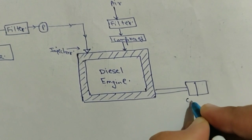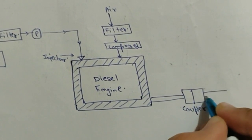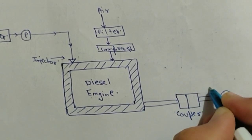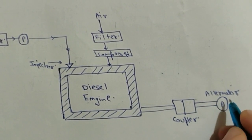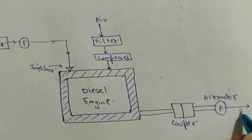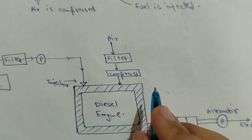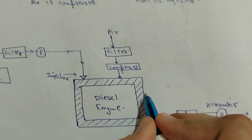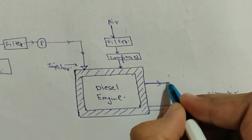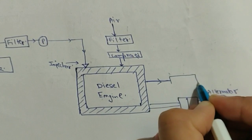The diesel engine is coupled to an alternator via a coupler. This alternator gives us electricity. The exhaust gases produced are then passed through a precipitator.